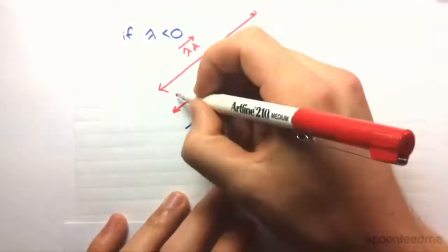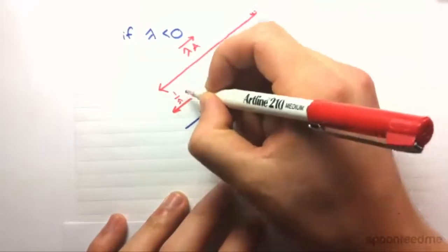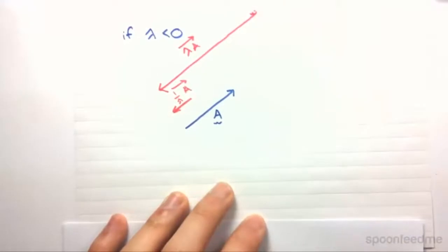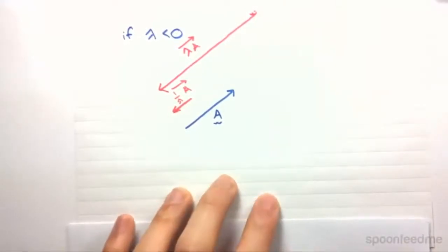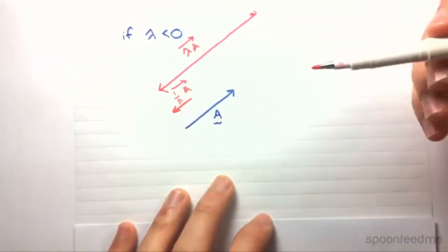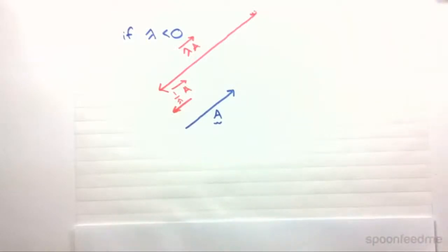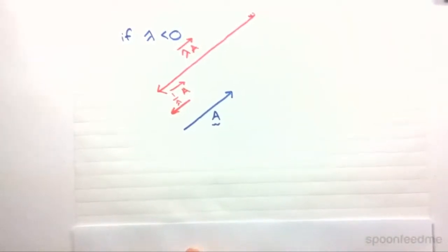And again, once it's divided, we end up with one over lambda A. And the magnitude is what changes when you multiply or divide by a scalar, and it reverses direction if the scalar is less than zero. And that concludes this lesson. Thanks guys.